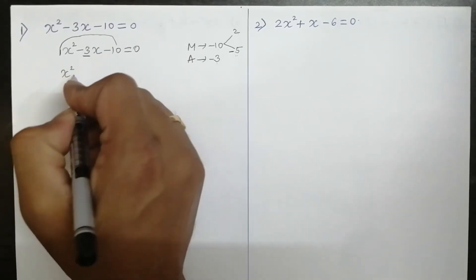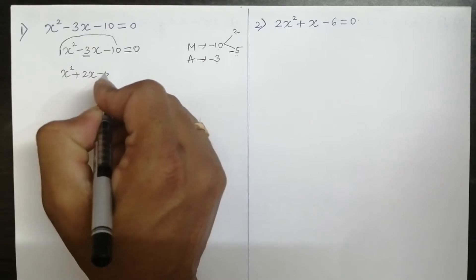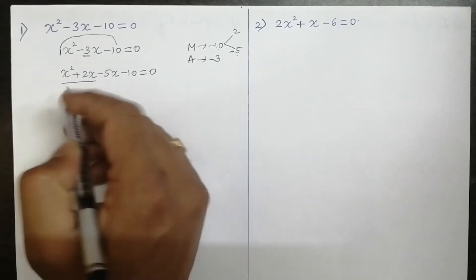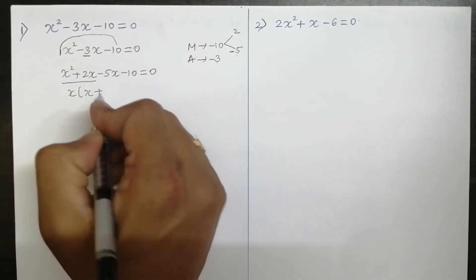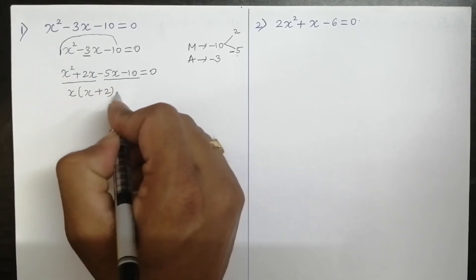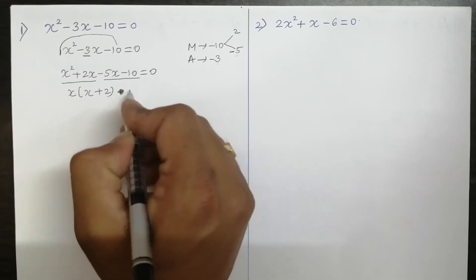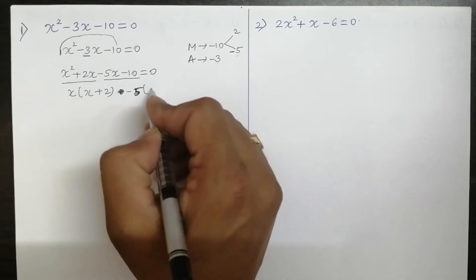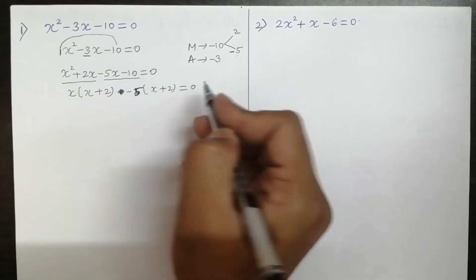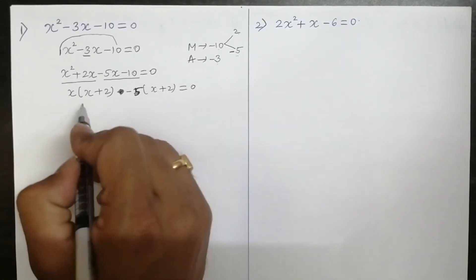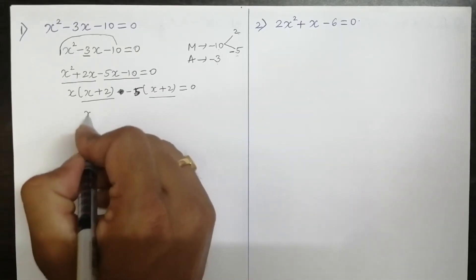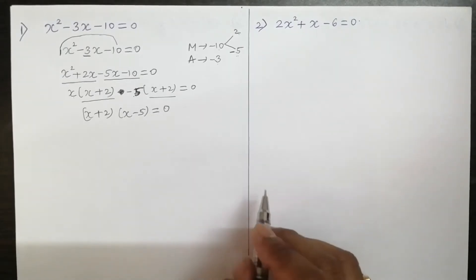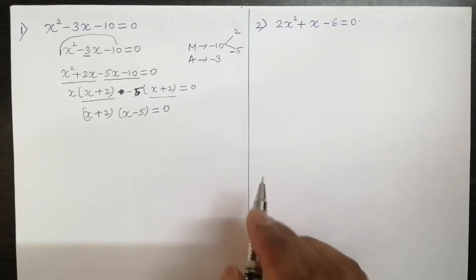So our factors give us: x² + 2x - 5x - 10 = 0. In the first two terms, x is common, so taking x out gives (x + 2). In the last two terms, -5 is common, so taking -5 out gives (x + 2). Now we have two terms, both with common factor (x + 2), so we get (x + 2)(x - 5) = 0.